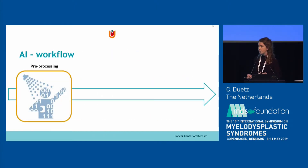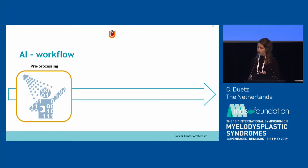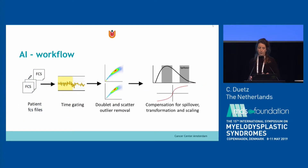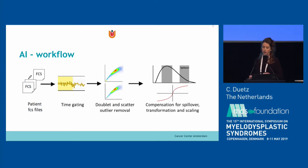We created an artificial intelligence workflow that consists of three stages. First, we clean and pre-process our data. We gate based on time, exclude doublets and scatter outliers, and do compensation, transformation, and scaling. This all happens automatically.